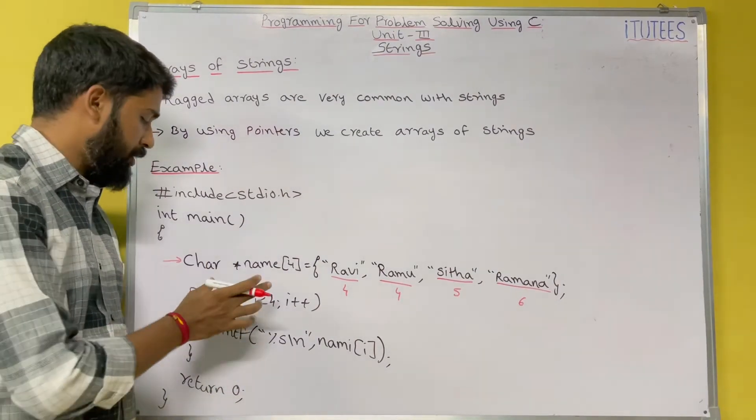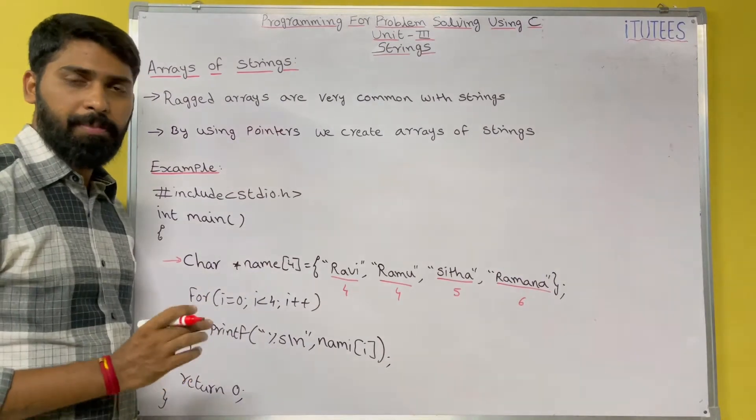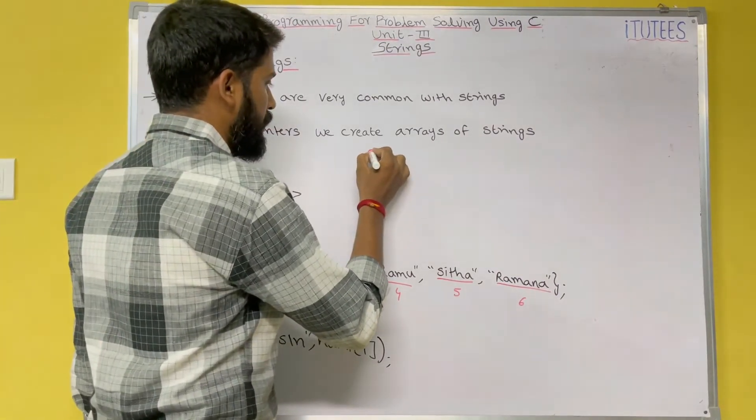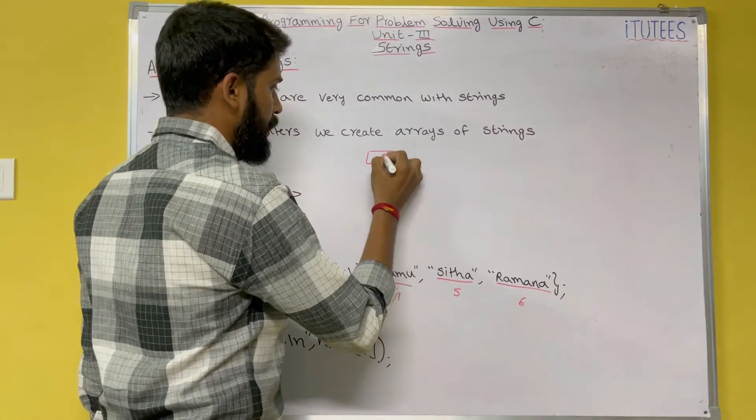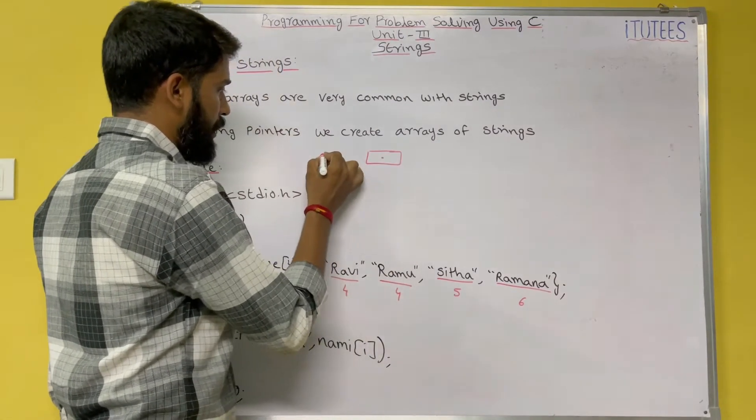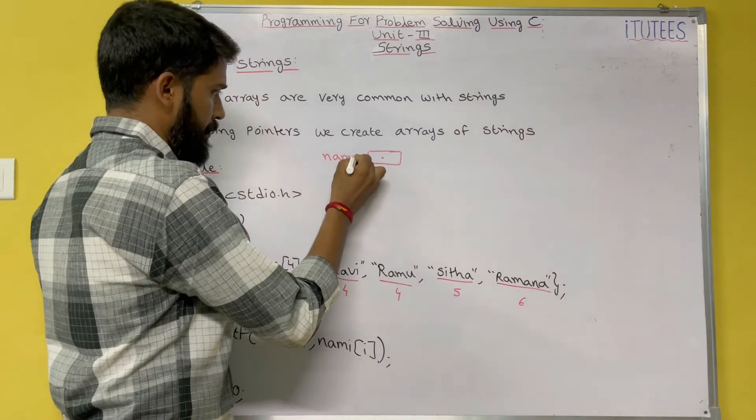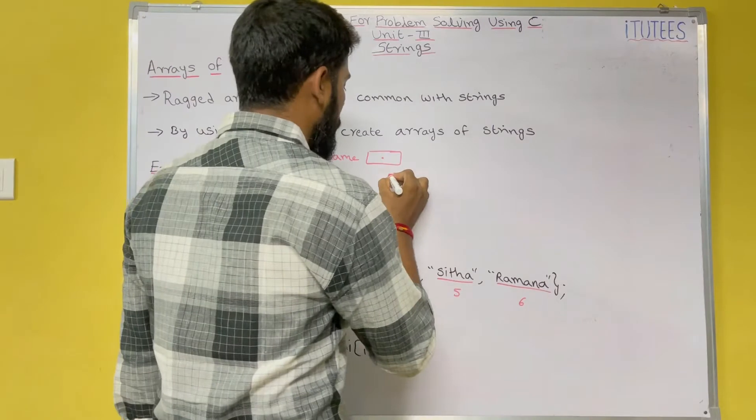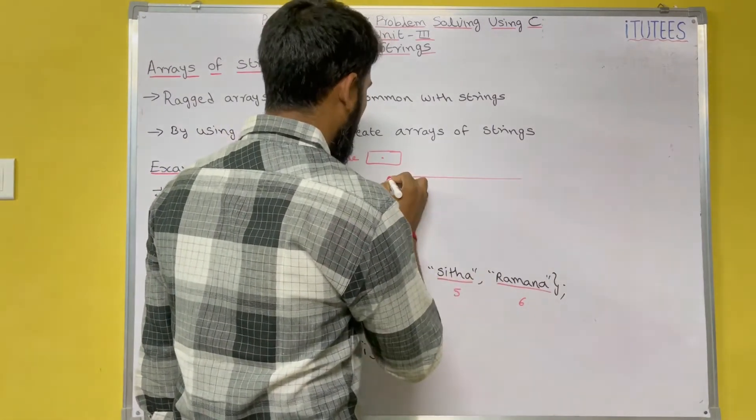The first instruction is char *name[4]. That means this is a pointer. This is the pointer and the pointer name is name. This pointer has 4 parts, name[4]. This is the pointers.